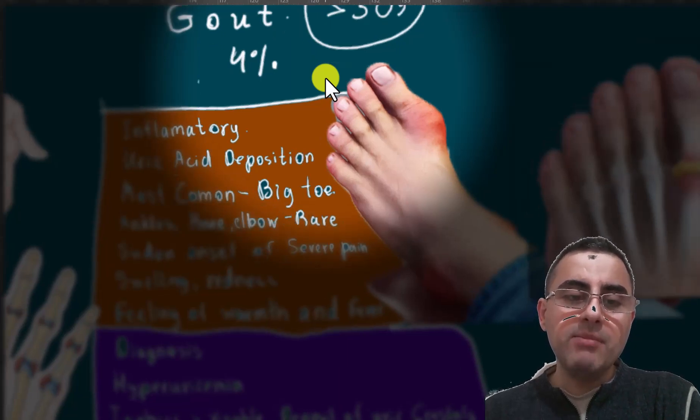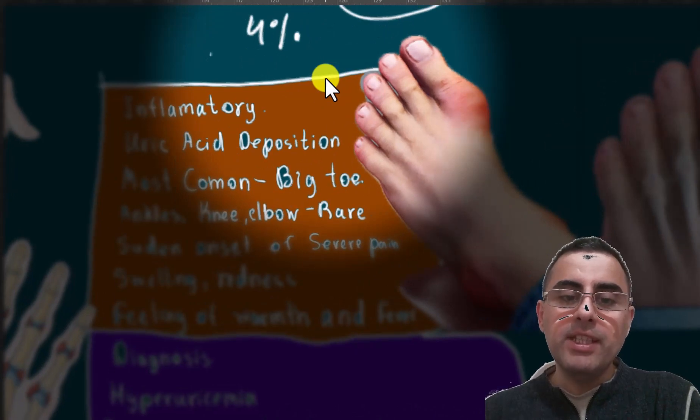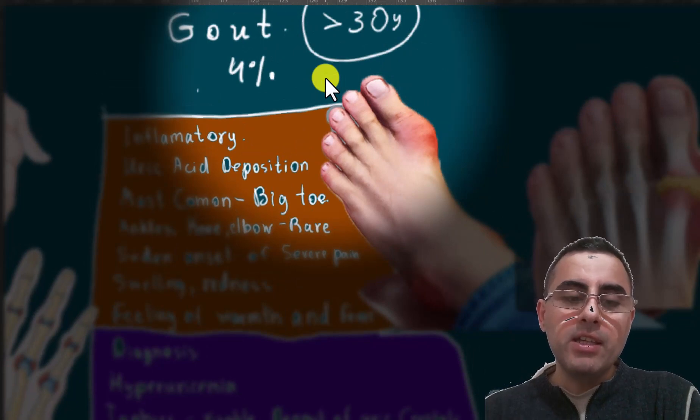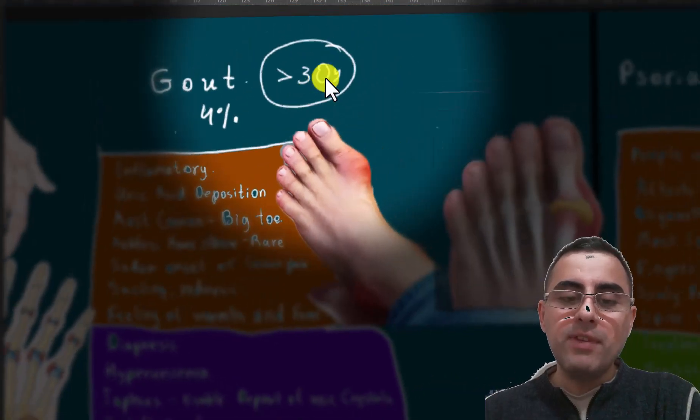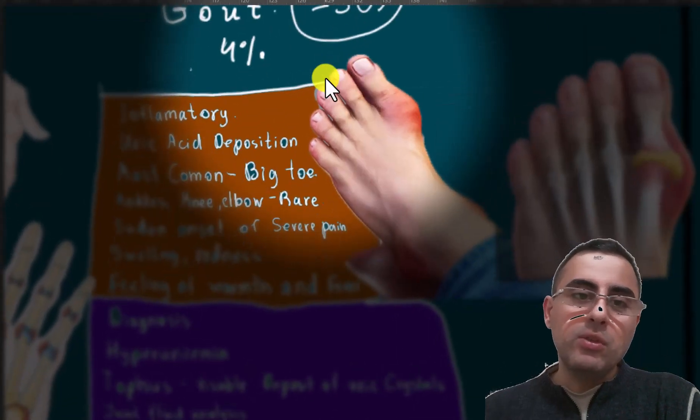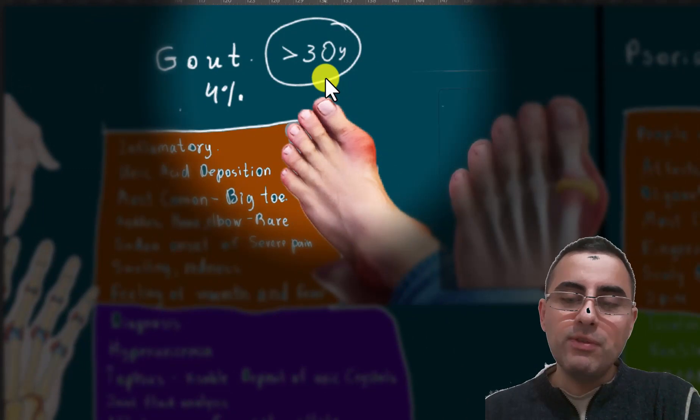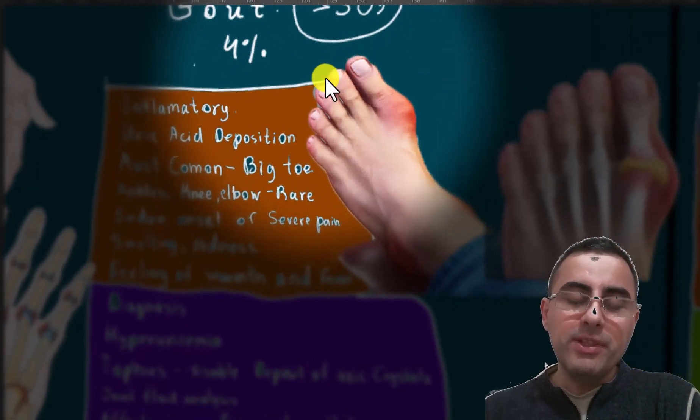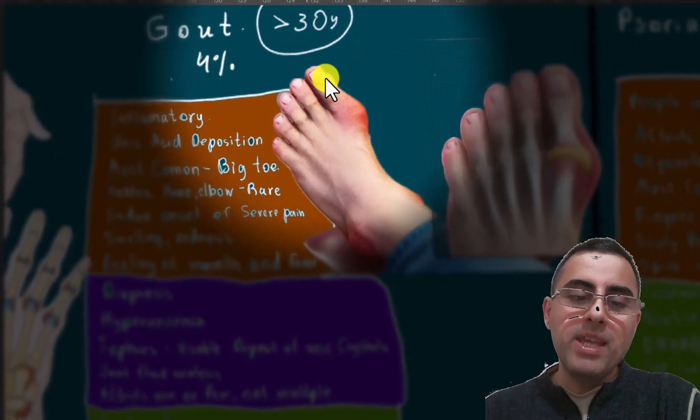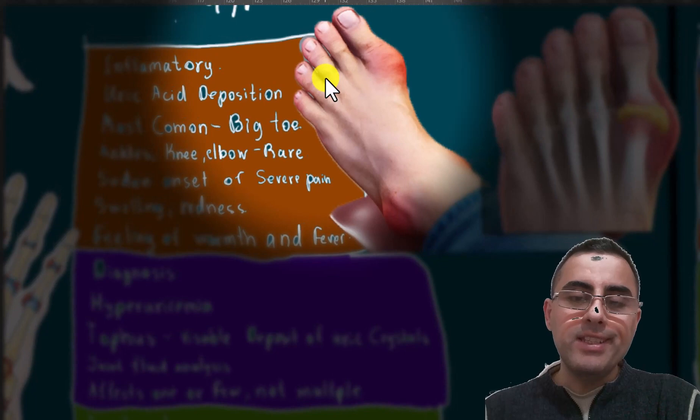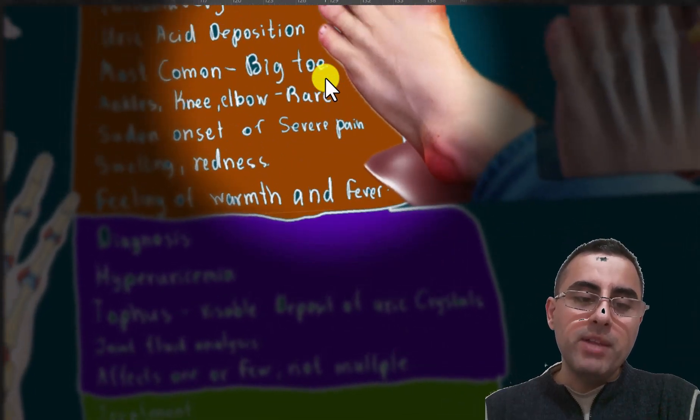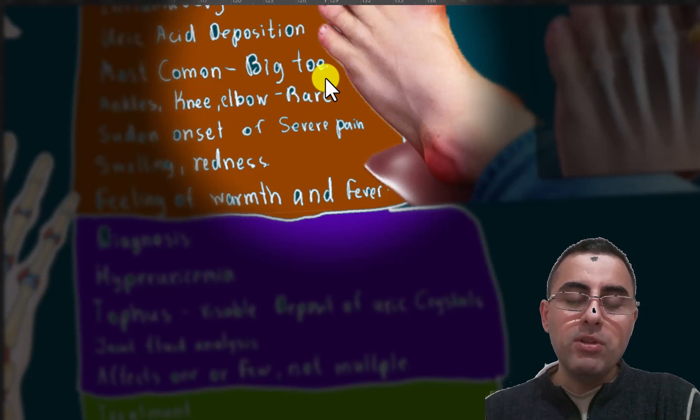Most commonly it affects the big toe, sometimes ankles and knees, elbows. Usually it has sudden onset and severe pain, swelling, redness, sometimes a feeling of warmth or fever. To distinguish gout from other types of arthritis is relatively easy based on clinical picture. In the blood we have hyperuricemia, and tophus is visible.